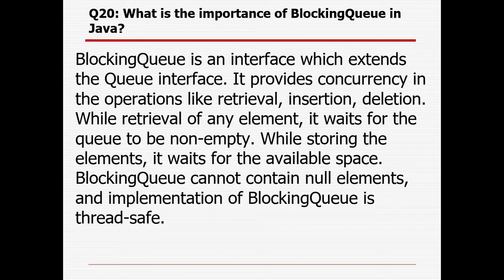What is the importance of blocking queue in Java? BlockingQueue is an interface which extends the queue interface. It provides concurrency in operations like retrieval, insertion, and deletion. While retrieving an element, it waits for the queue to be non-empty — only if it is non-empty is retrieval possible. While storing an element, it waits for available space. BlockingQueue cannot contain null elements and it is thread-safe.